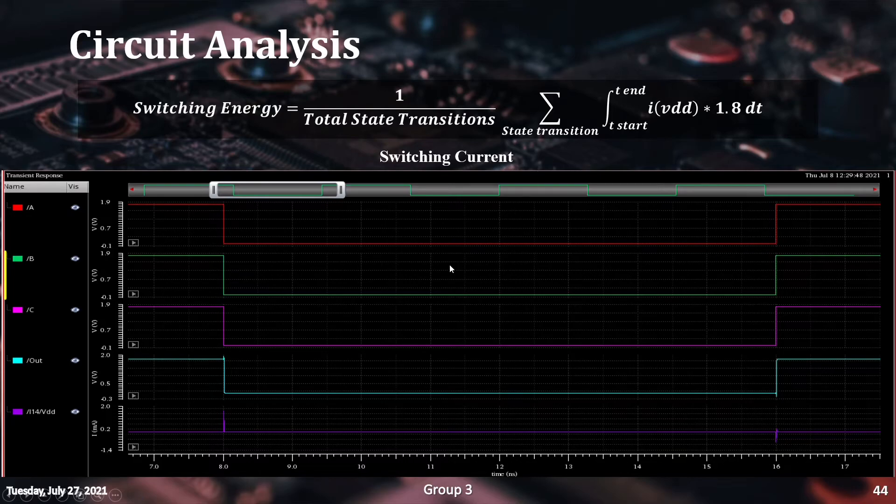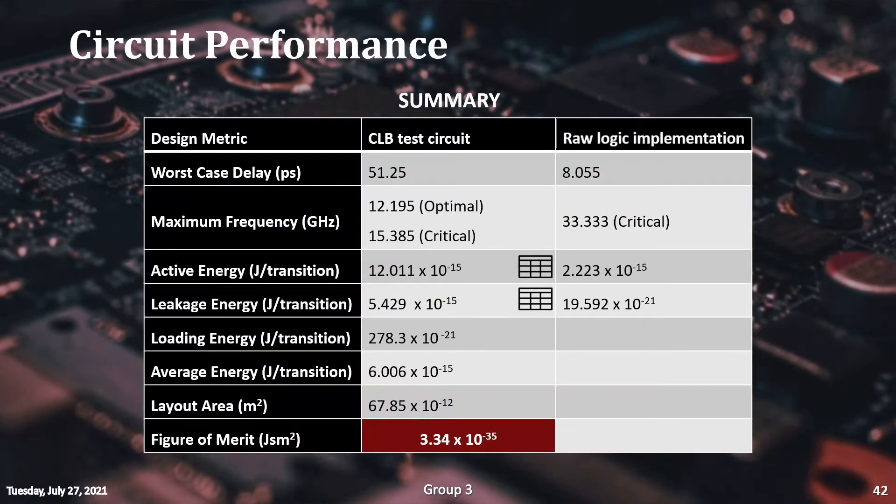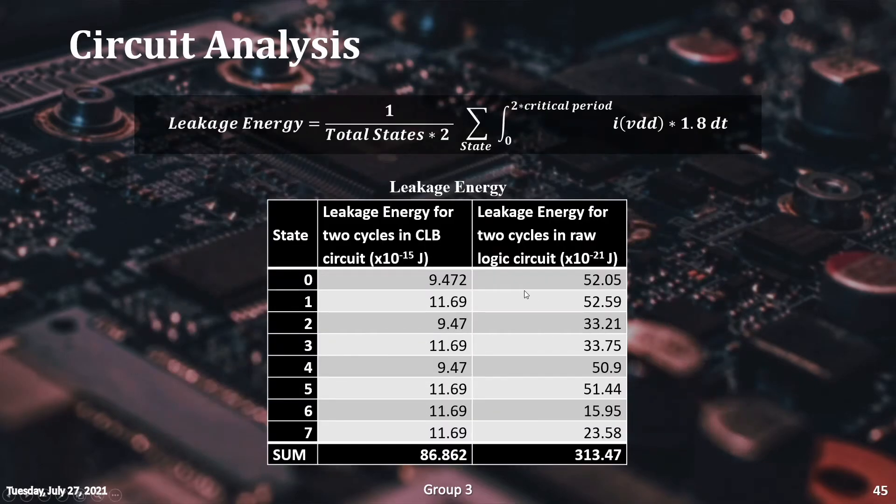These values are not taken at the maximum operating frequency as in that case, it's difficult to find the difference between stable and transitioning voltage values. The leakage energy is measured by operating the circuit at the maximum frequency and keeping the inputs unchanged. For all these states, the energy losses are calculated and the leakage for one cycle is measured.